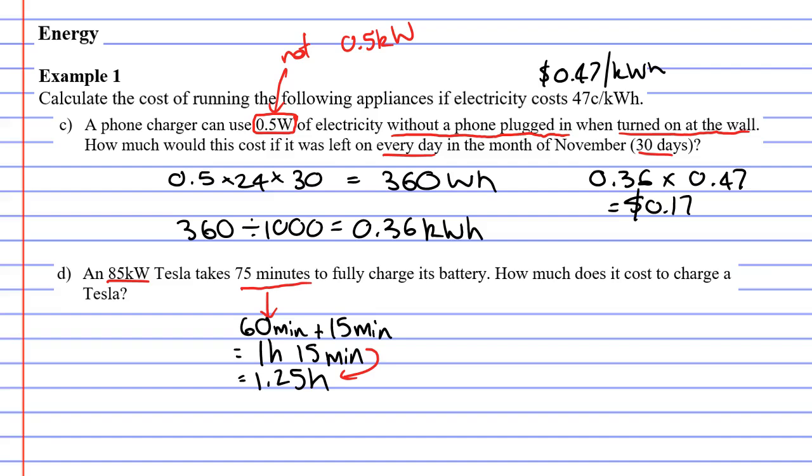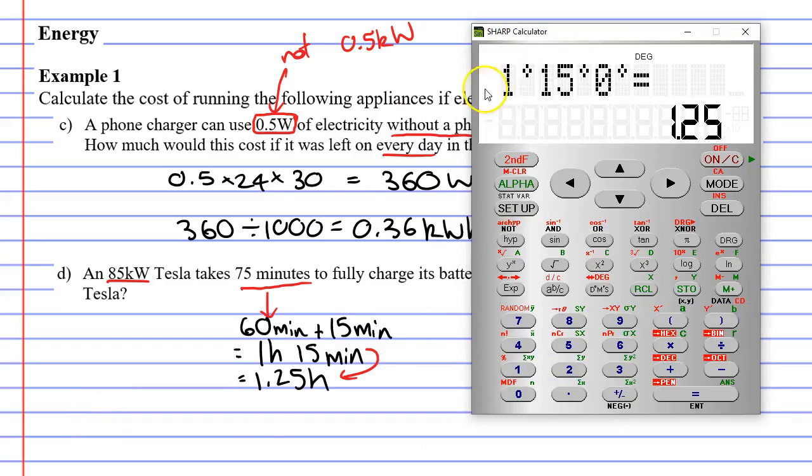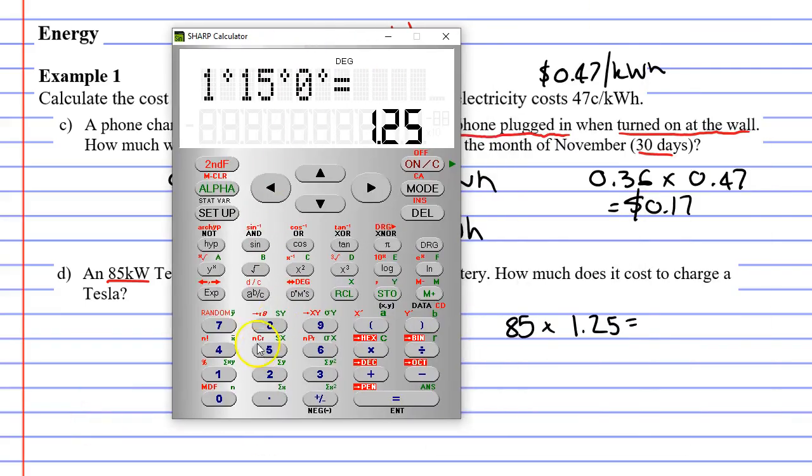Now what we need to do is we need to multiply the number of kilowatts, 85, by the number of hours it took to charge this. So 85 times 1.25, what's that going to equal? Let's work it out.